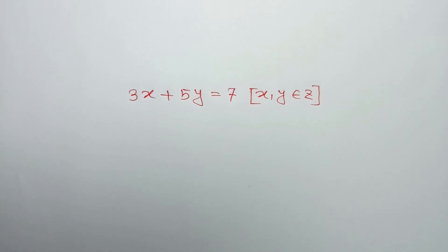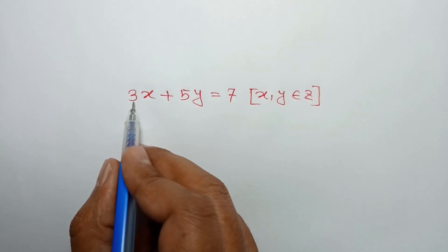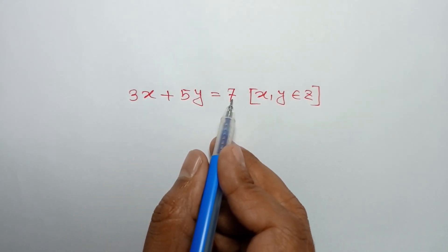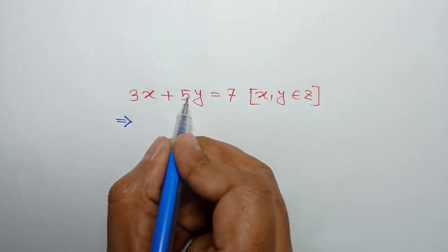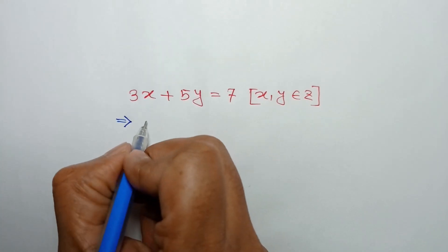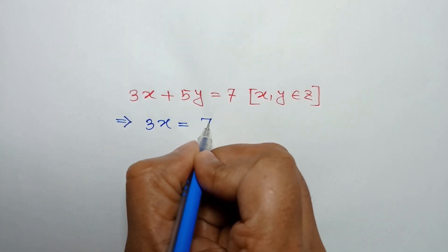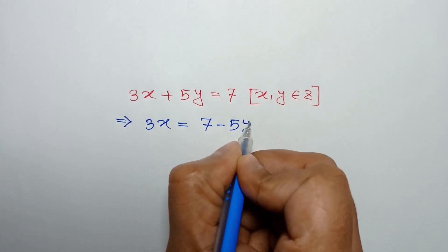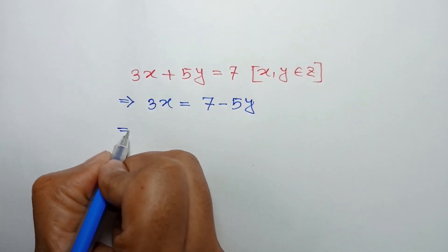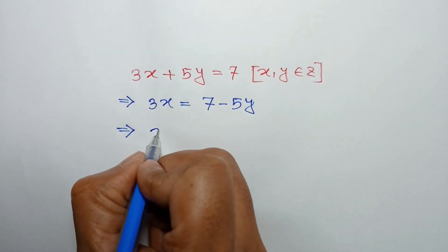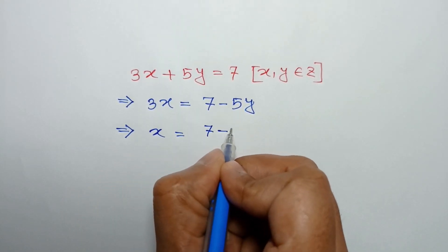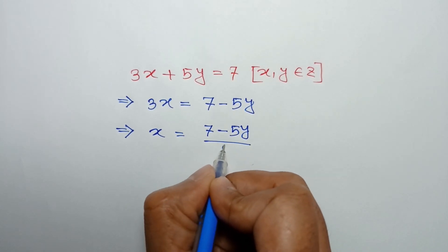Hi everyone. In this video I am going to show how to find the general integer solution of the equation 3x + 5y = 7. Taking 5y to the right side we can write 3x = 7 - 5y. Dividing both sides by 3, we get x = (7 - 5y) / 3.